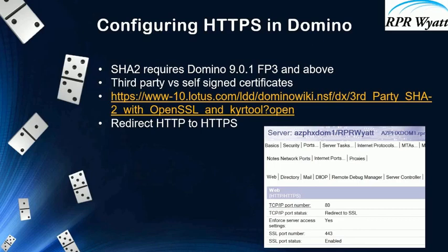What had also changed in Domino was how we go about creating the different components that are used for HTTPS. Previously, historically, we went to that server certificate administration database and in a nice, friendly UI, created the keyring file, the STH file, the certificate request, imported everything, and we were done.